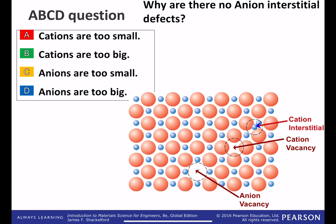So that would be putting an anion into the same anion volume here. Two anions in the same volume. Why is that extremely unlikely? Is it A, because cations are too small? B, cations are too big? C, anions are too small? Or D, anions are too big?